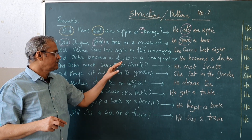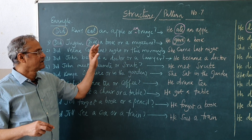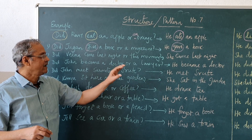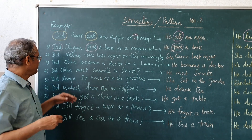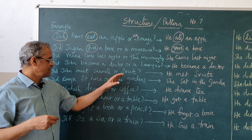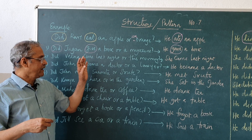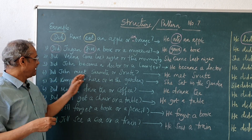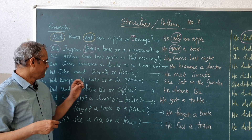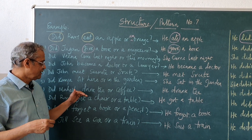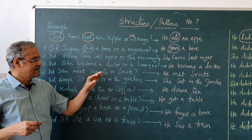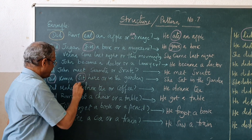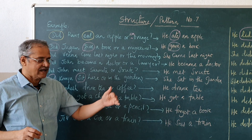Did John become a doctor or a lawyer? He became a doctor. Did John meet Sasmita or Shruti? He met Shruti. 'Did meet' becomes 'met.' Did Kavya sit here or in the garden? She sat in the garden. See here — 'did sit,' past tense, it becomes 'sat.'